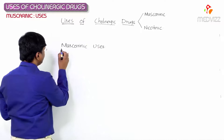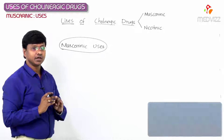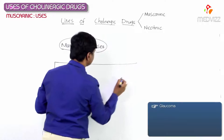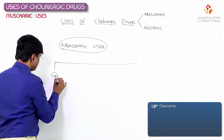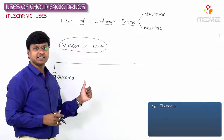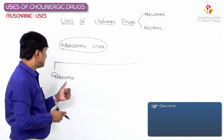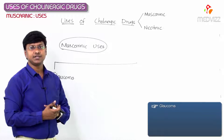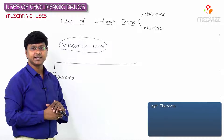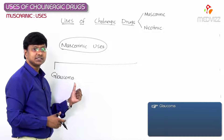The first and foremost muscarinic use is that these drugs are used in the treatment of glaucoma. Glaucoma is a clinical condition characterized by raised intraocular pressure. By their muscarinic action, these drugs reduce the intraocular pressure and thereby treat glaucoma.